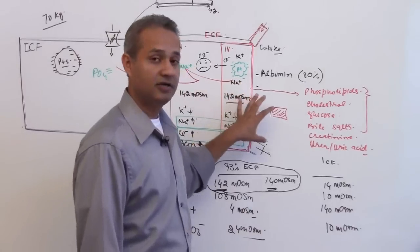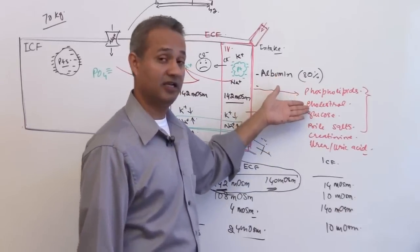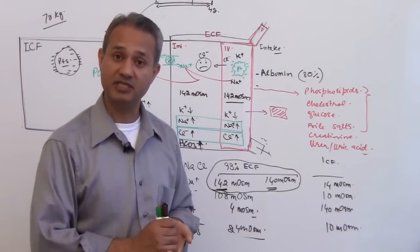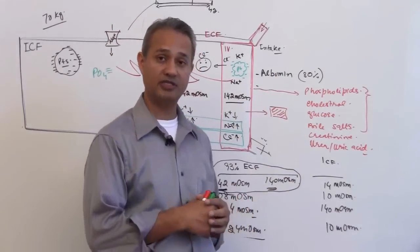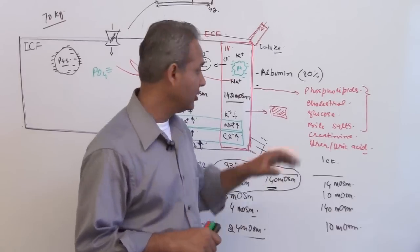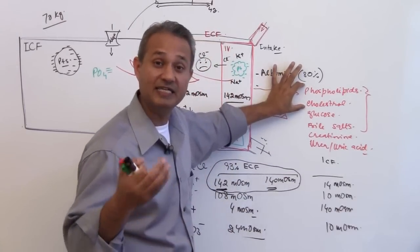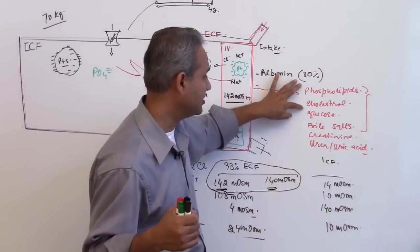Then non-electrolytes - non-charged elements. The majority, I would say about 60 percent of non-charged elements, are phospholipids, and then about another 20 to 25 percent is cholesterol. So these are the fatty acids and cholesterols which are making about 70 to 80 percent of the remaining substances in here.